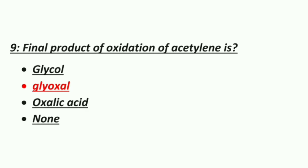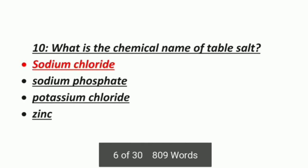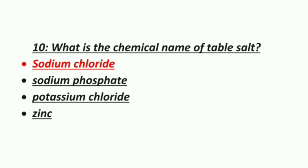Ninth MCQ: the final product of oxidation of oxalic acid is — Option A: Glycol, Option B: Glyoxal, Option C: Oxalic acid, Option D: None. Tenth MCQ: what is the chemical name of table salt? Option 1: Sodium chloride, Option 2: Sodium phosphate, Option 3: Potassium chloride, Option 4: Zinc. The correct answer is sodium chloride.